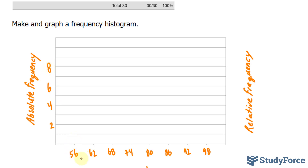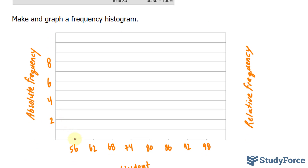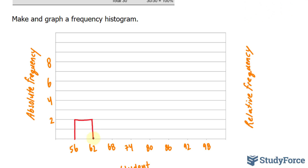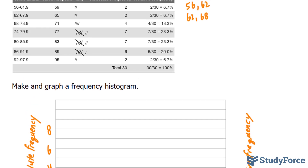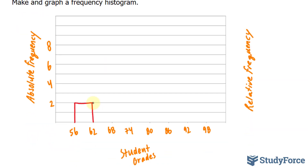Within the 56 to 62 class, we had a total of 2, so I'll draw a bar that reaches up to 2. Note that the difference between a histogram and a bar graph is that in a bar graph you have separation between the classes, whereas in a histogram there is no separation. Between 62 and 68 we also had 2, and between 68 and 74 it went up to 4.